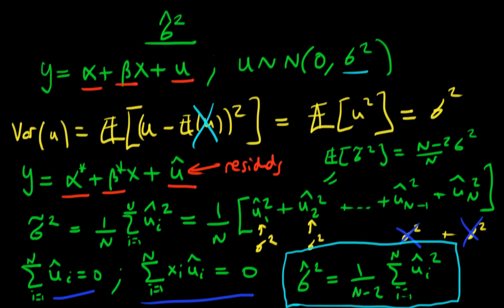And in general, this is the bivariate case so I've got n minus two in the denominator here. If we have k regressors it just becomes n minus k in the denominator, because instead of just having two constraints we essentially have k constraints. So that's the extension to more than the bivariate case when we have k regressors.